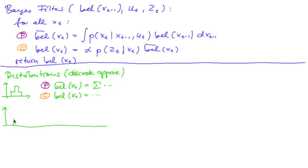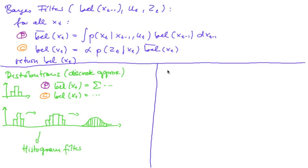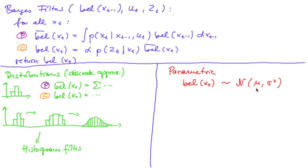We noted that if you start somewhere and we move, then by the convolution our distribution will get wider until, in our case, it approximated a bell-shaped distribution. Now subdividing space in that way leads to a histogram filter, whereas our other representation was parametric. We said our belief is normally distributed so that the entire distribution can be represented by the first and second moment, mu and sigma squared.